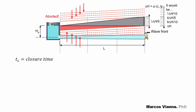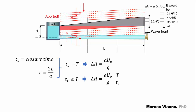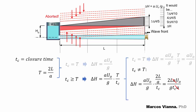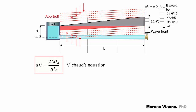We can find a formula for this value. Let TC be the closure time, and T equals 2L over A be the reflection time. As we saw in the quick closure video, when TC equals T, we have delta H equals AU0 over G. When TC is greater than T, delta H will be proportionally smaller. If TC equals T, delta H will be AU0 over G, as it should be. If TC is not equal to T, we substitute the values and find that delta H equals 2LU0 over GTC. This expression is known as Michaud's equation, and it fits our case.